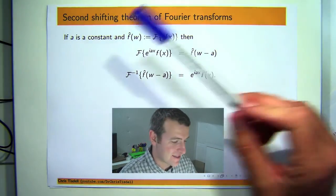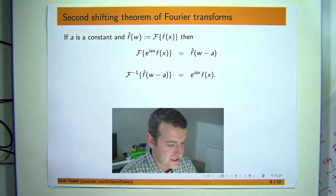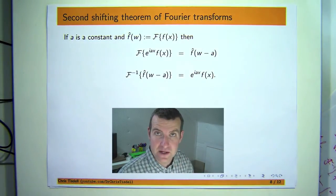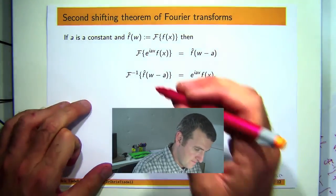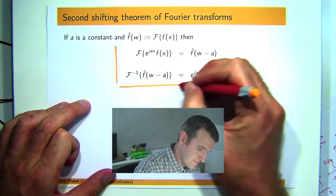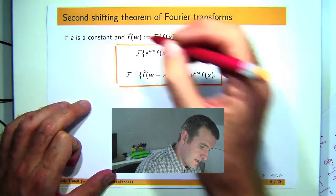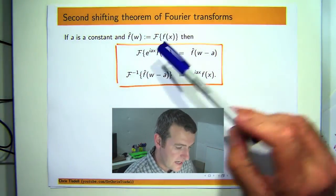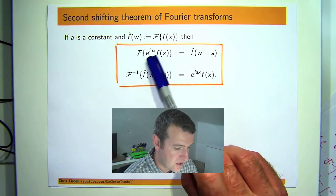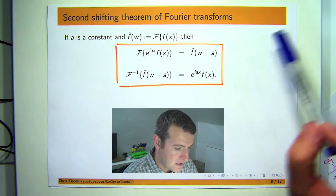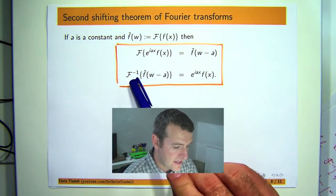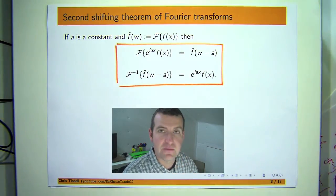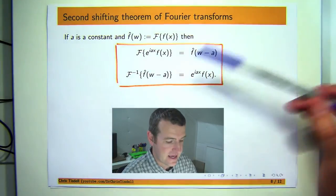Today's presentation is about the second shifting theorem of Fourier transforms. So I'm going to prove the result and I'm going to do an example. The second shifting theorem is important when we either want to take the Fourier transform of this kind of product or we want to take the inverse transform of this shifted function. So you've got a shift in the w in this case.